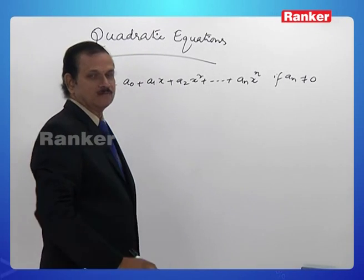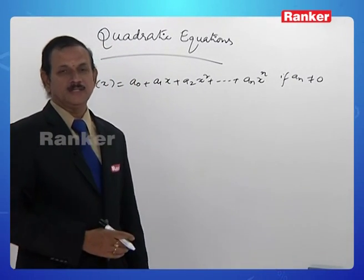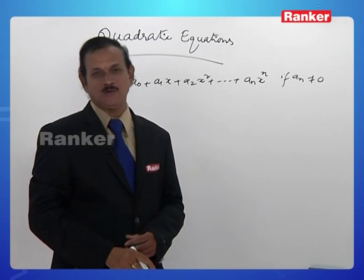If n is 1, if it is a first degree polynomial, then it is called a linear polynomial.